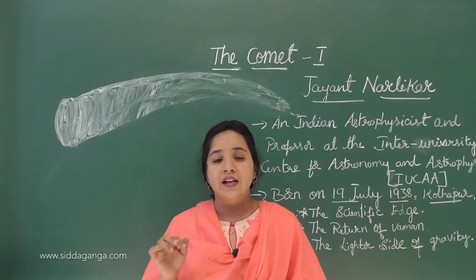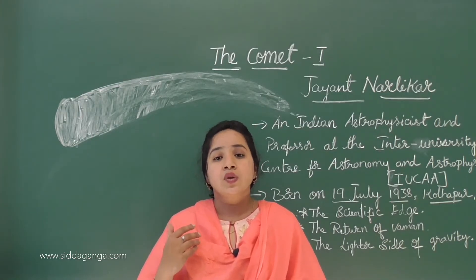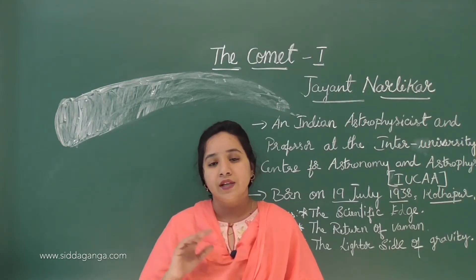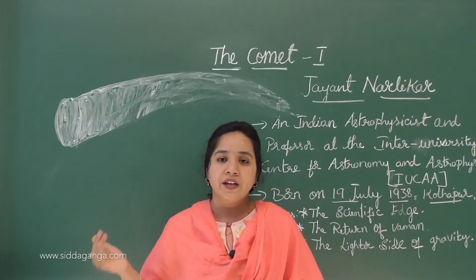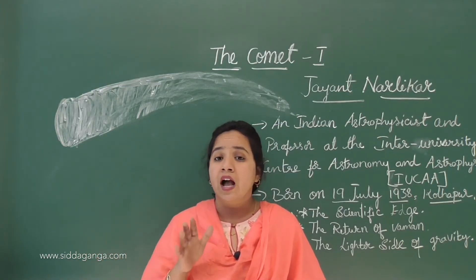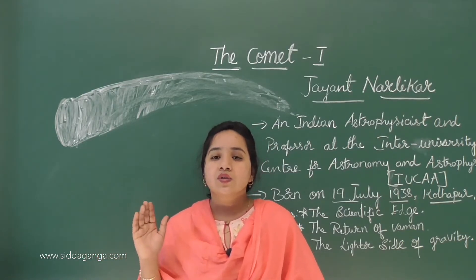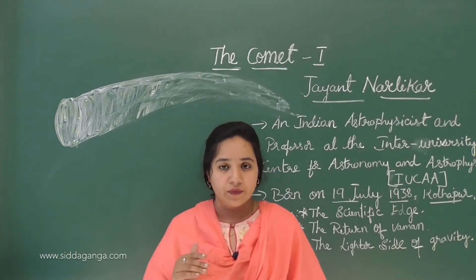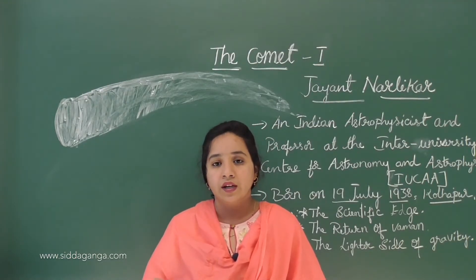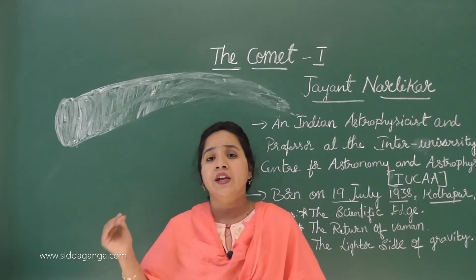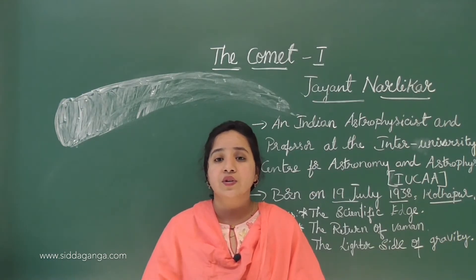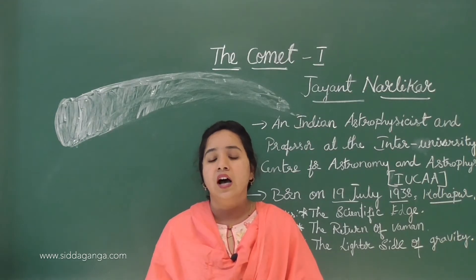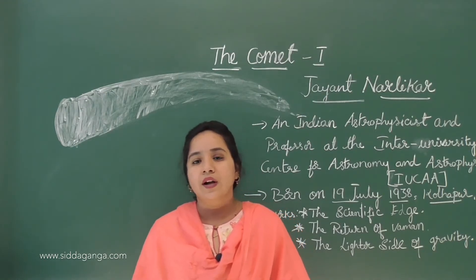The scientists and religious preachers are thinking about this in different manners — these two groups think differently. If the comet collides with the Earth, the whole life on Earth will be destroyed. The collision should be avoided.